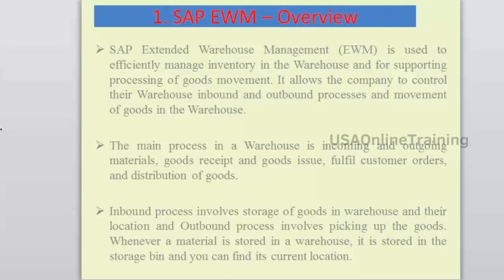The storage location is divided into storage types, sections, and storage bins. Think of a pharmaceutical store — there are rows and columns like big racks, sections within the racks, and boxes within the sections where medicines are kept. Whenever you want a medicine, the person goes directly to that box, removes it, and gives it — delivery is faster because they know where the product is kept. EWM delivers this capability.